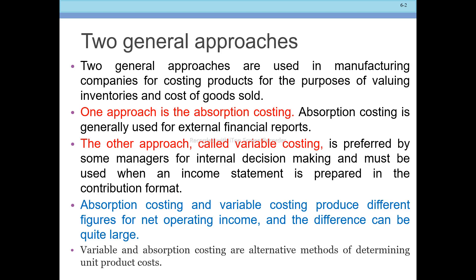Absorption costing is generally used for external financial reporting purposes — for example, preparing the income statement for external parties. Variable costing, on the other hand, is preferred by managers for internal decision-making purposes. So the costing method used depends on whether the purpose is internal or external.